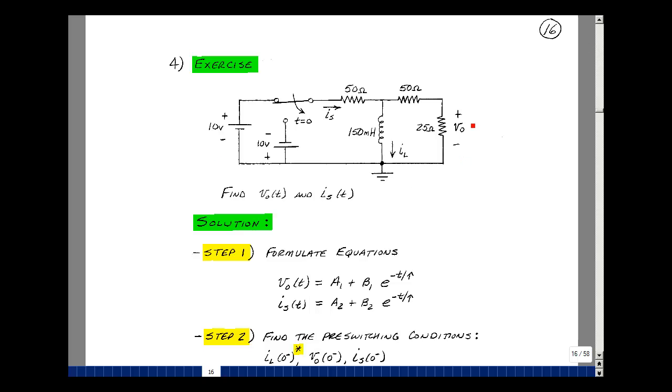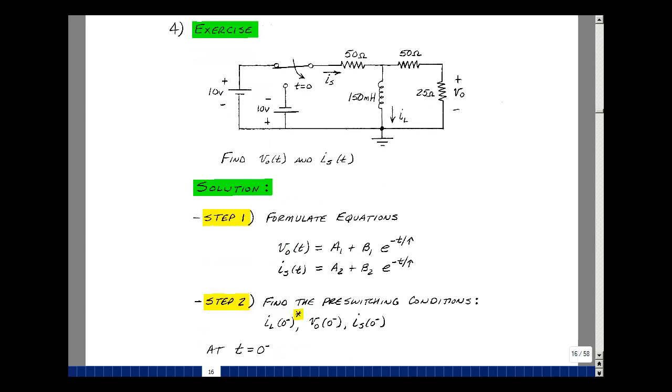Suppose we have the following circuit, which has a single inductance, a single-pole double-throw switch, dual power supply, and some passive components. Suppose that we solve for the voltage across the 25-ohm resistor and the current through the 50-ohm resistor.